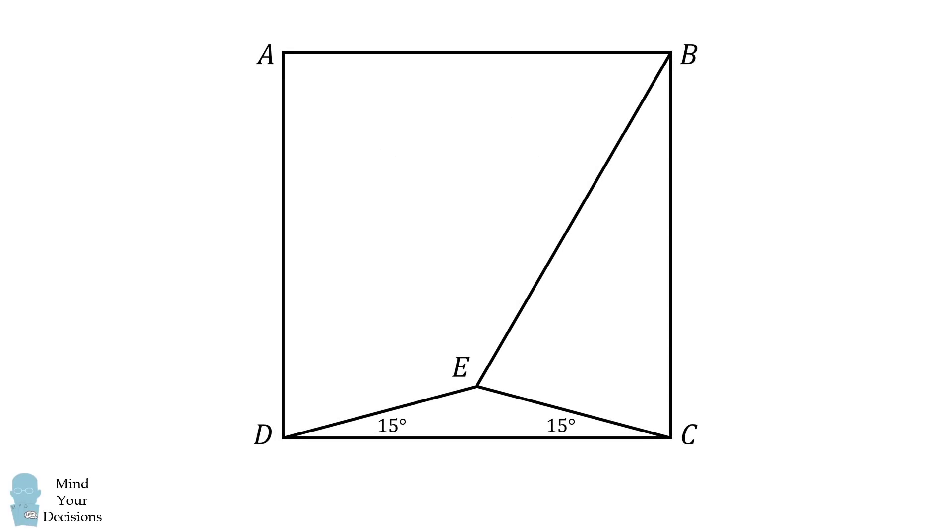We will first consider triangle EDC. We will construct a congruent triangle alongside BC. Label the point on the interior as F.